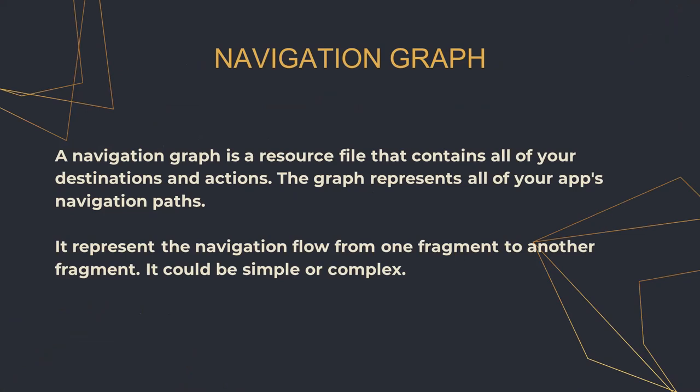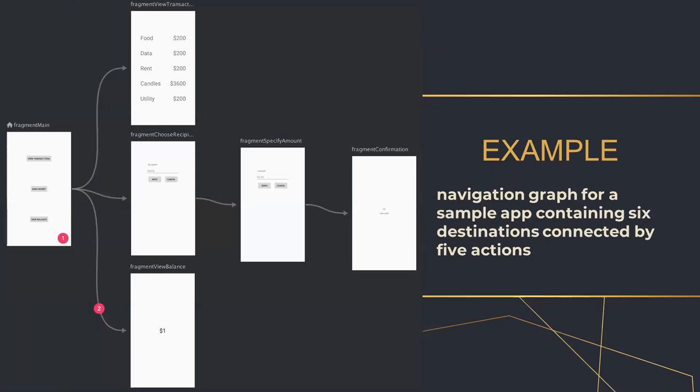Here is an example of a navigation graph. It has six fragments or destinations connected with arrows called actions. The starting fragment can reach other screens by following the arrows. This is a new feature where you can visually place destinations and actions to indicate the navigation flow.